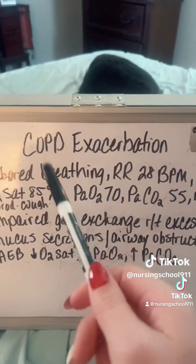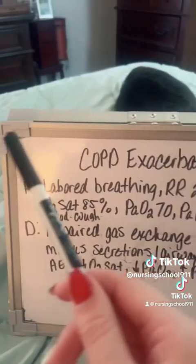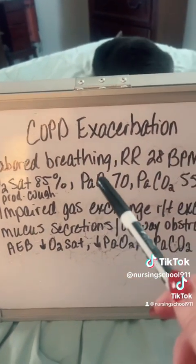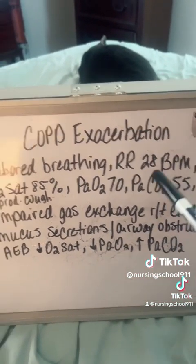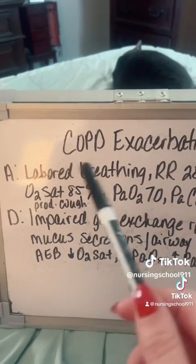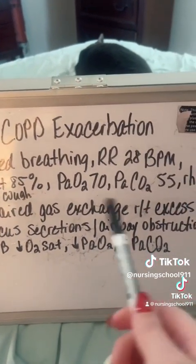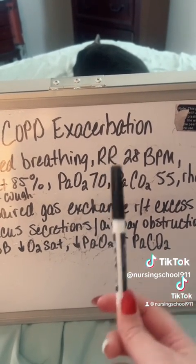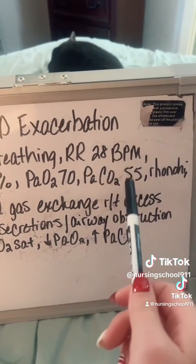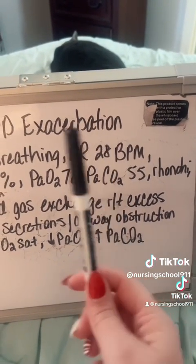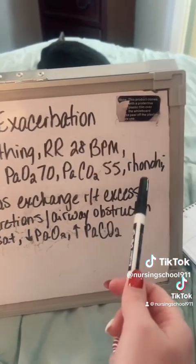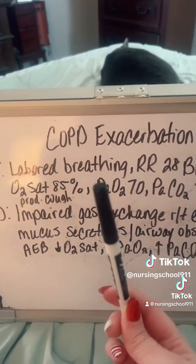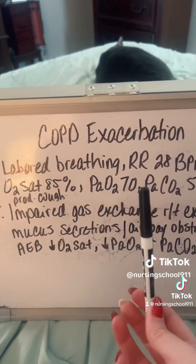Let's apply the nursing process to a COPD exacerbation. The pertinent assessment data includes labored breathing, a respiratory rate of 28 breaths per minute, and an oxygen saturation of 85%. Looking at ABGs, the PaO2 is 70 — it should be at least 80 — and the PaCO2 is 55 when it should be between 35 and 45. I'm hearing ronchi and noting a very productive cough, which clues me in that the patient is exacerbating their chronic bronchitis.